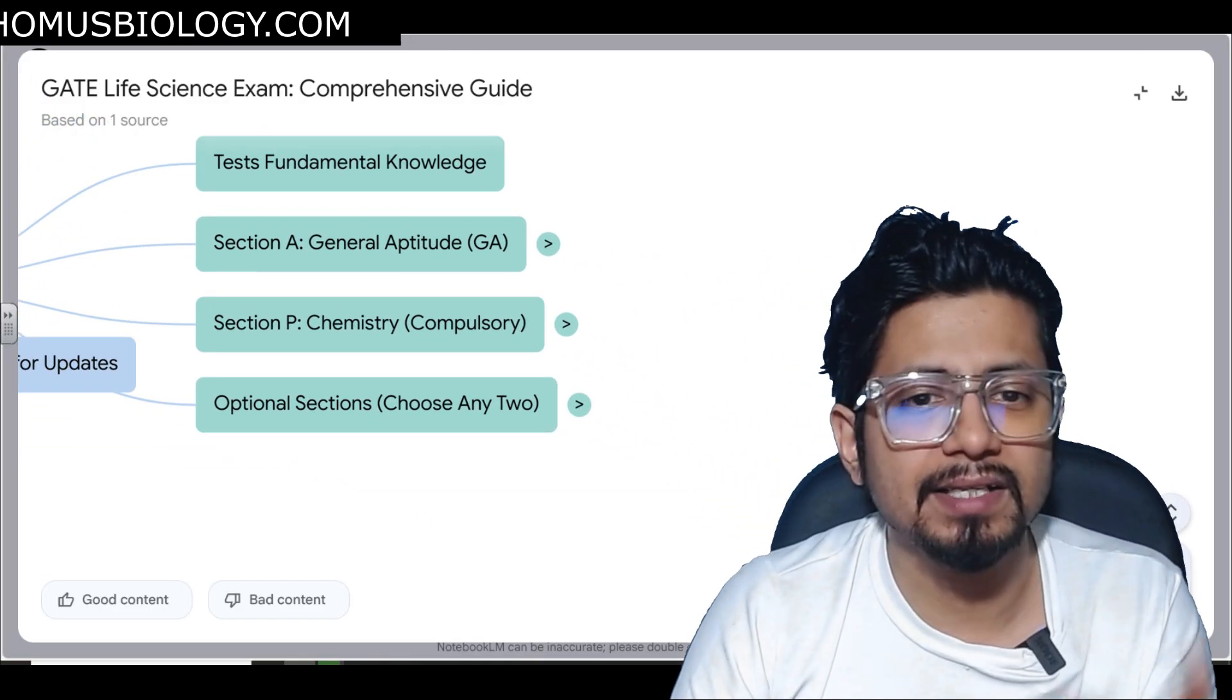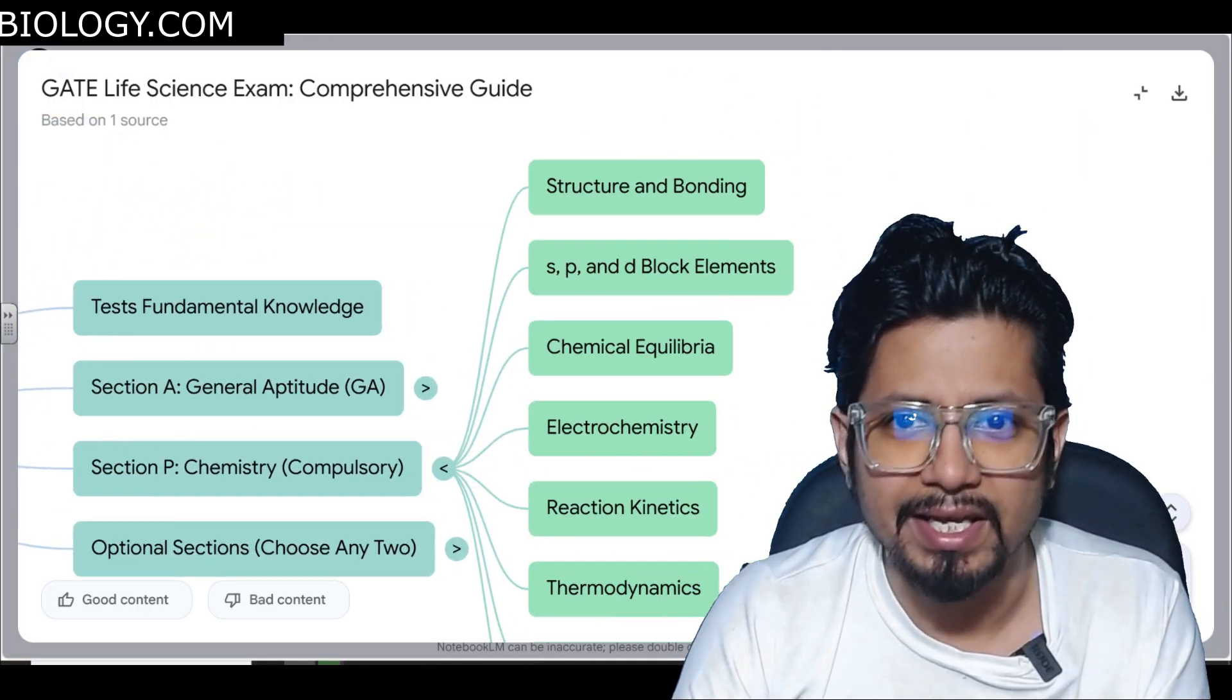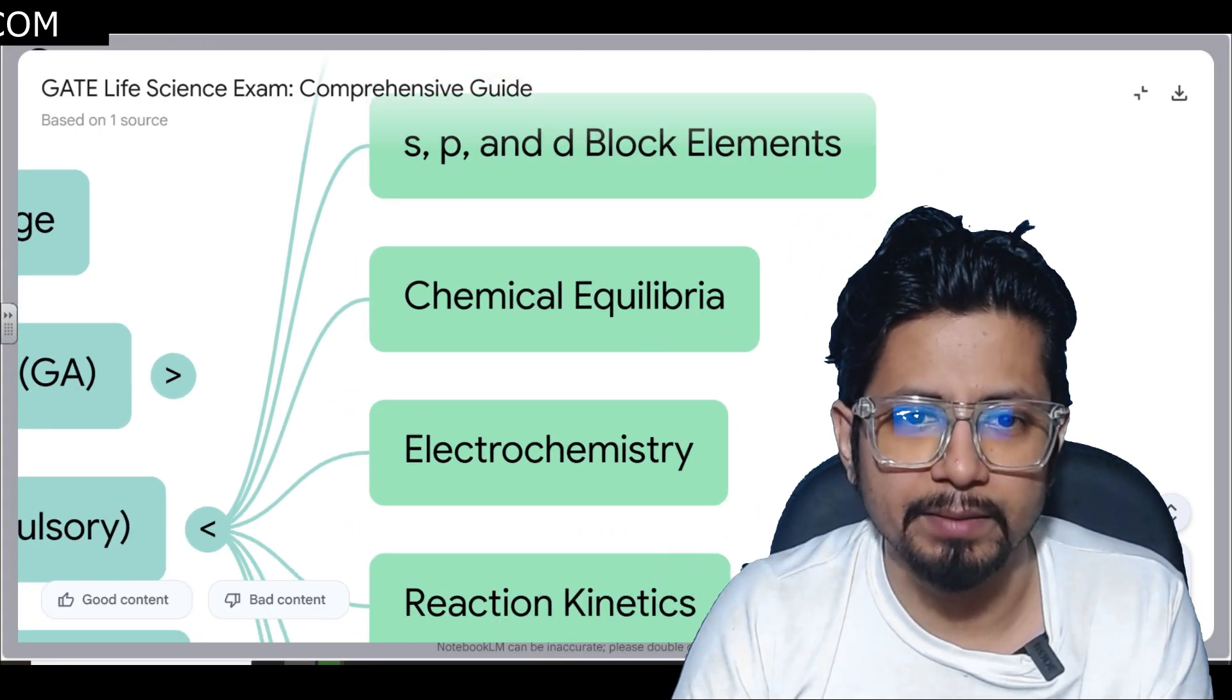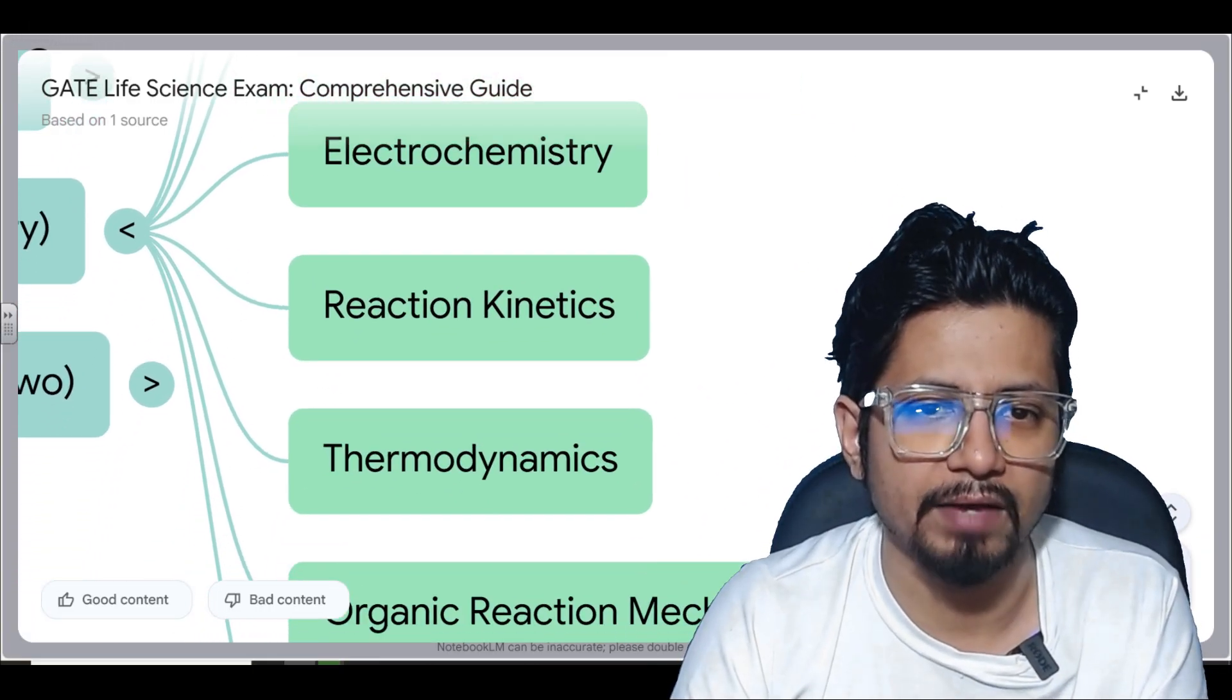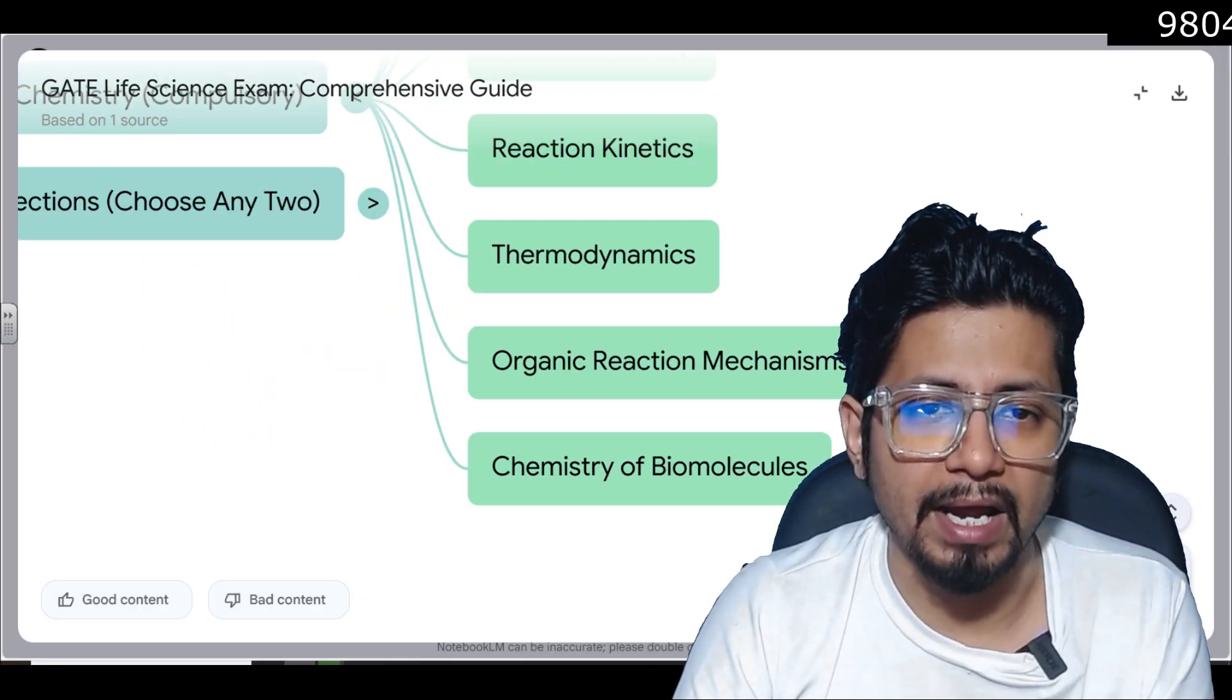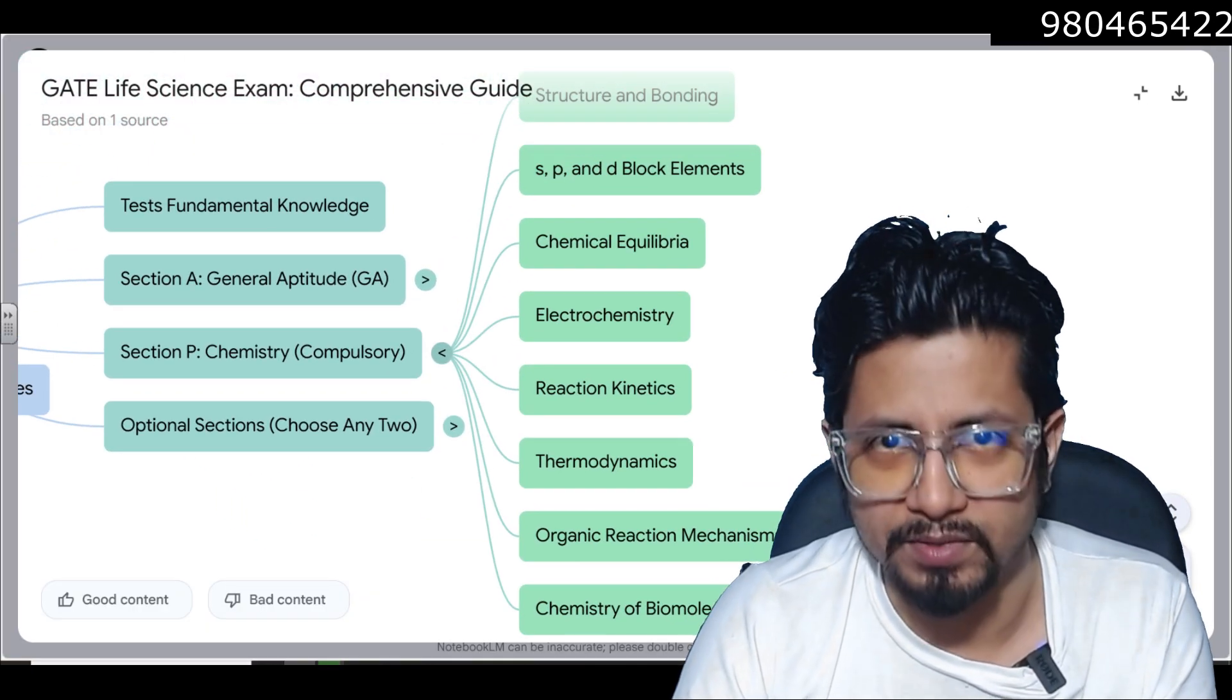That is Section A compulsory, you cannot skip it. Then there is another compulsory section, that is Chemistry. Here we have structure and bonding, S and P and D block elements, chemical equilibria, electrochemistry, reaction kinetics, thermodynamics, organic reaction mechanisms and chemistry of biomolecules. All these things will be under the compulsory chemistry syllabus.